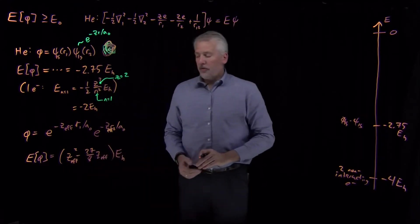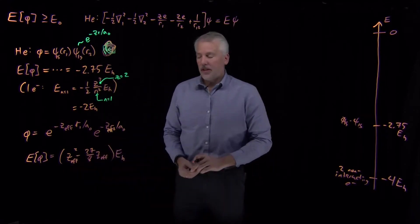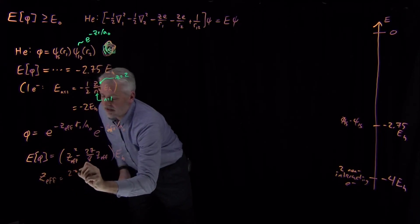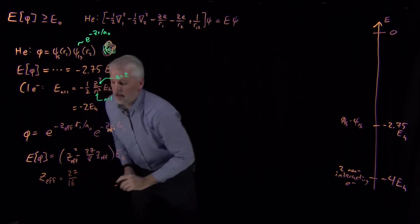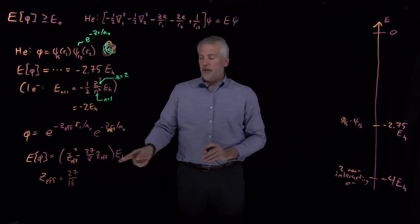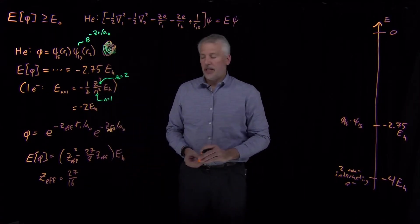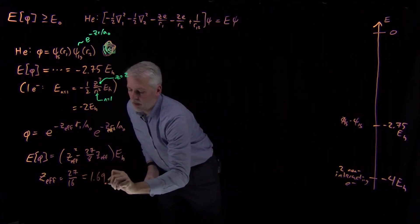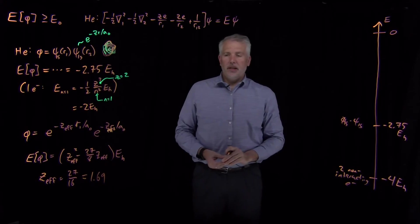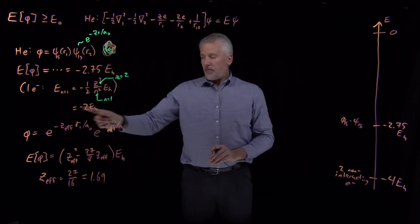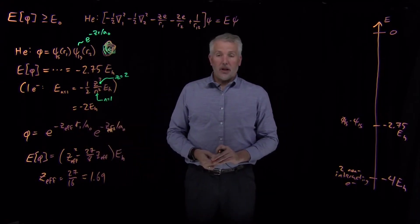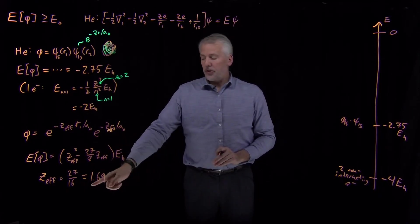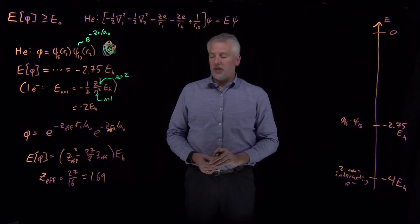I then can look for the value of z effective that makes this as small as possible. And what I find is the value of z effective that minimizes this variational energy is 27 over 16, or about 1.7, 1.69. So what that tells us is the trial wave function that gives me the lowest possible energy is one that doesn't have a nuclear charge of 2. It has a nuclear charge of about 15% lower, a nuclear charge of about 1.7.